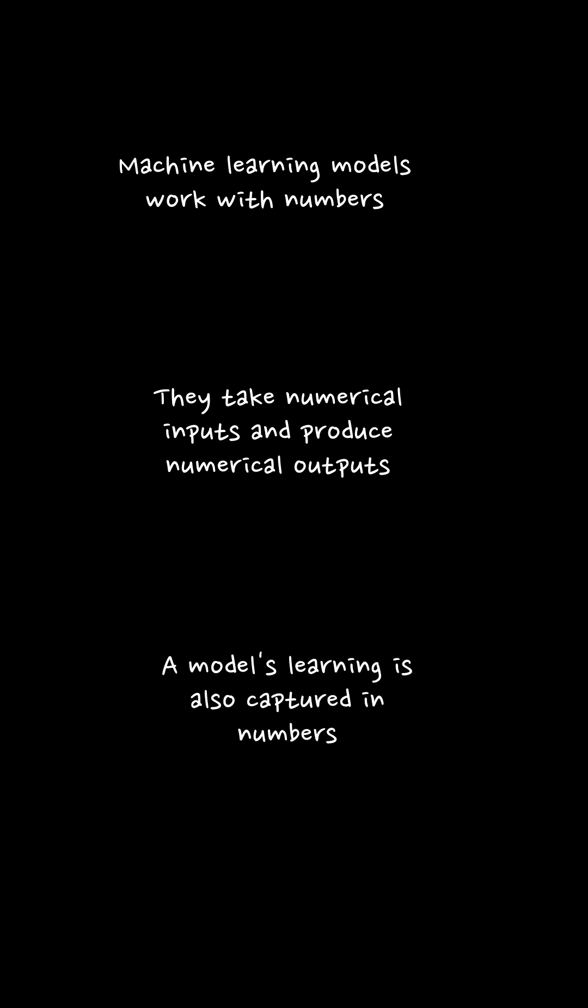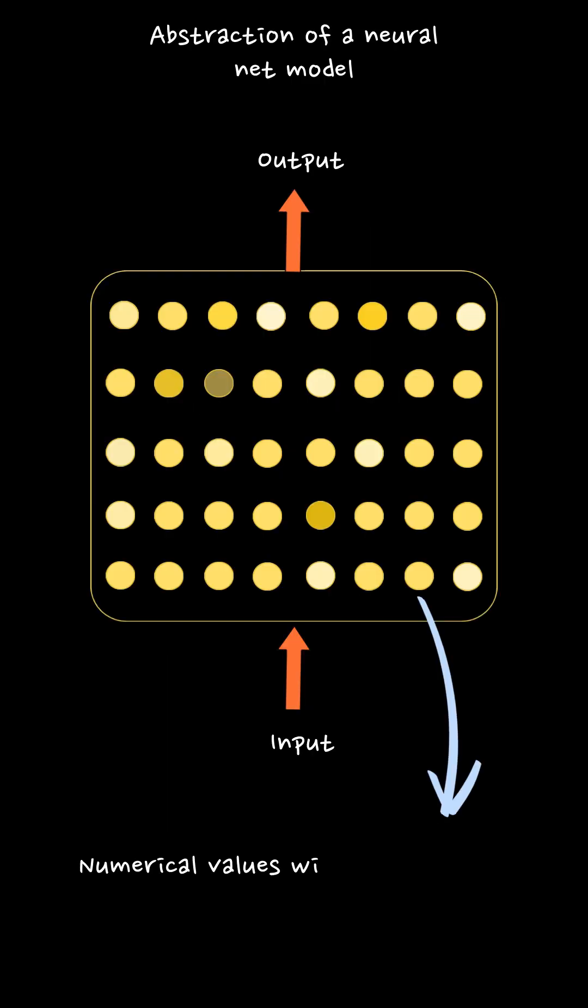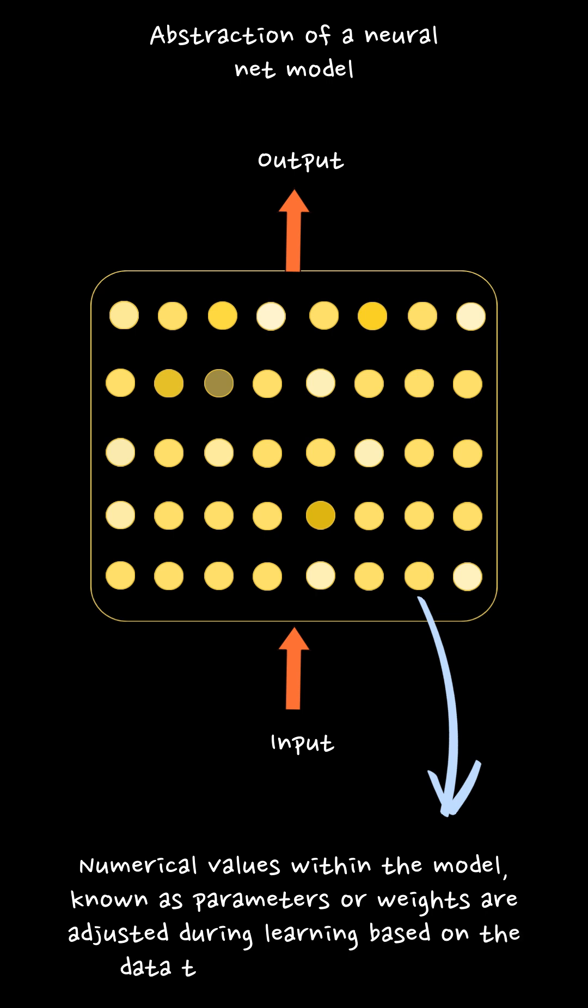A model's learning is also captured in numbers. That is, models learn by adjusting certain numerical values known as parameters or weights based on the data they are given. This adjustment process continues until the model can make the most accurate predictions possible.